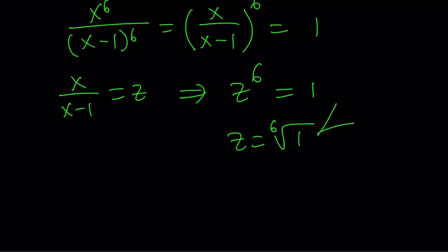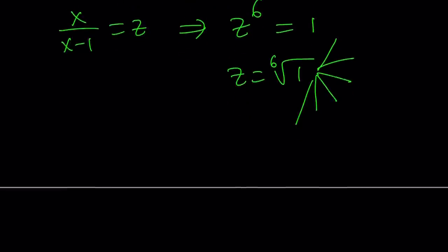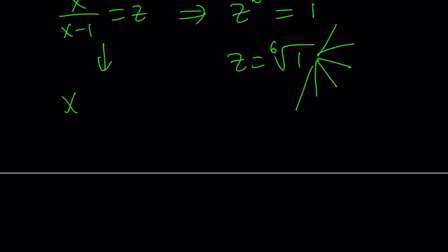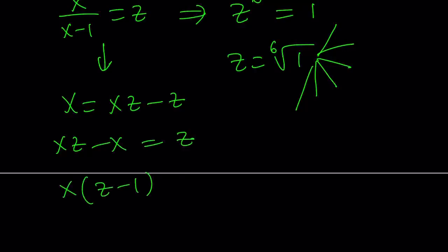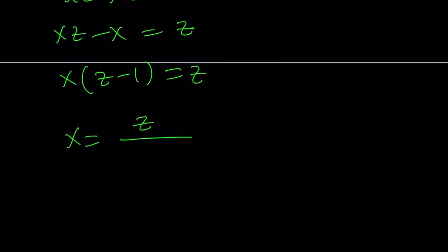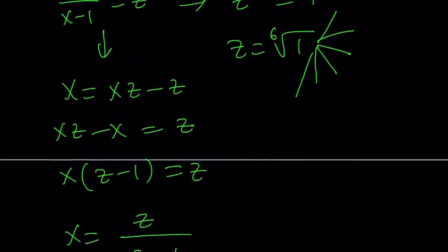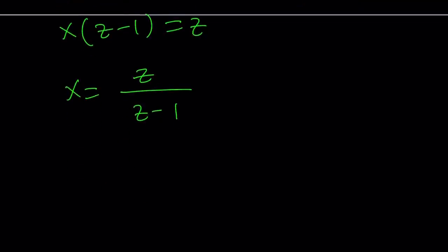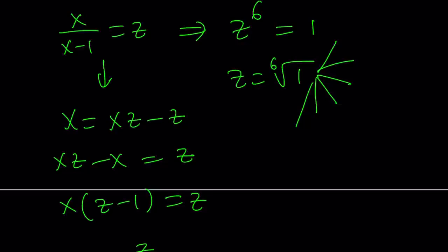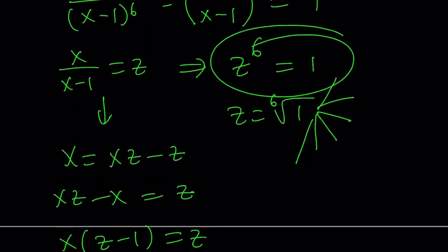In the complex world, 1 has 6 complex roots — not just 1. z equals 1 is one of them, but that's not going to give us a real solution. One of these roots is going to give us the real solution. So since x over x minus 1 equals z, let's solve for x: x equals xz minus z, then put xz minus x together, factor out x, and you get x in terms of z. z being the 6th roots of unity, z to the 6th equals 1. To find these roots, we write 1 in polar form as cosine 2pi plus i times sine 2pi.